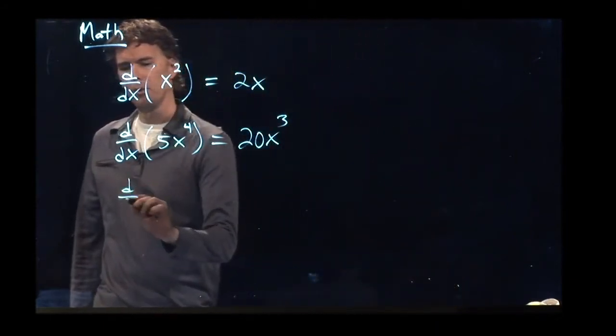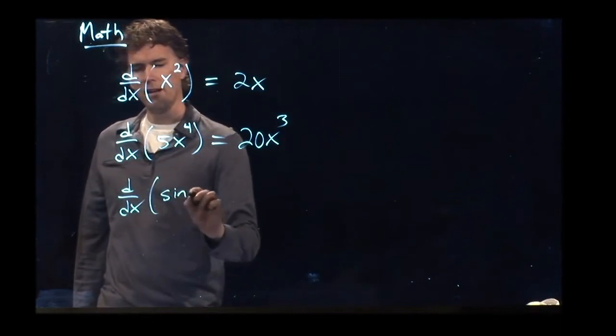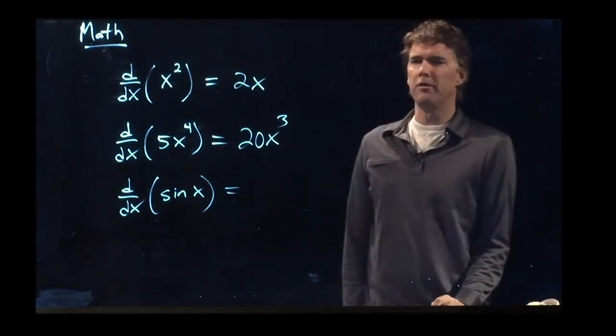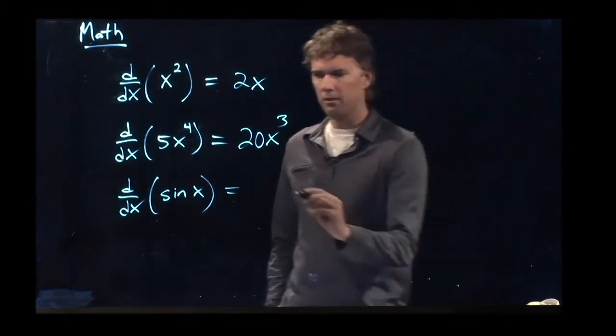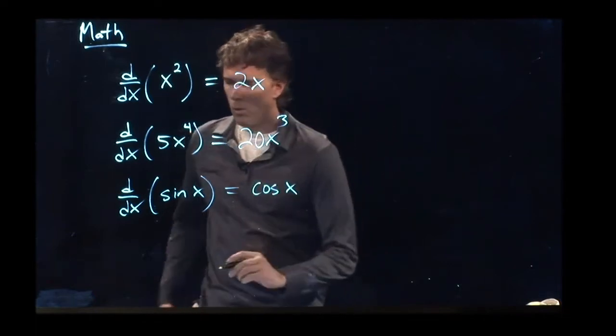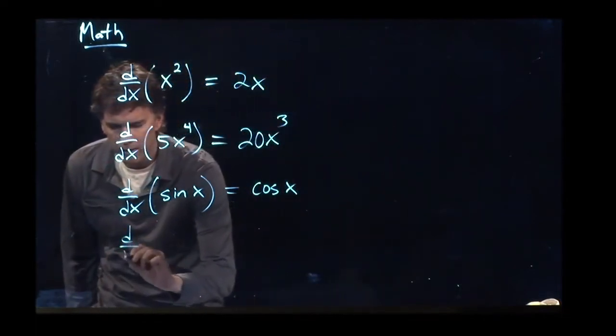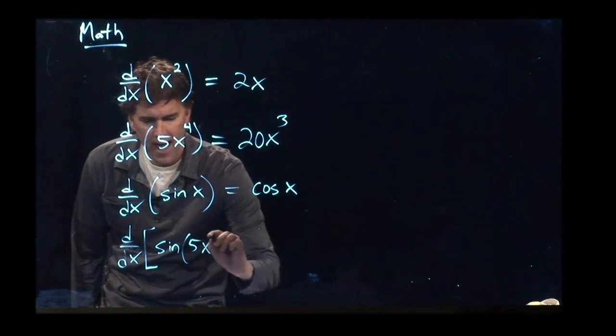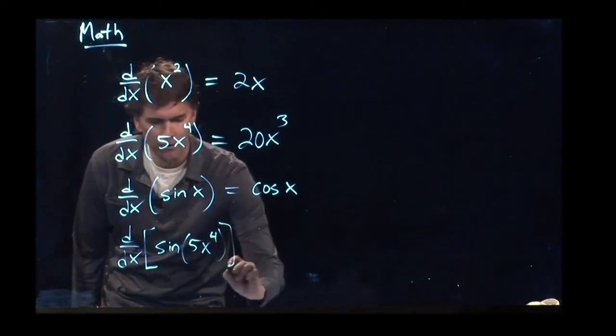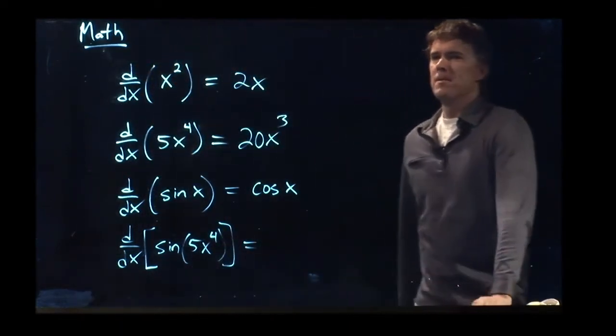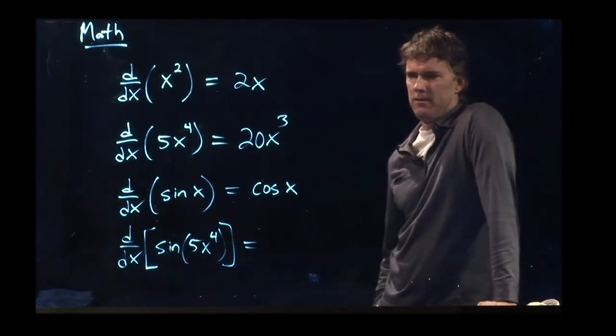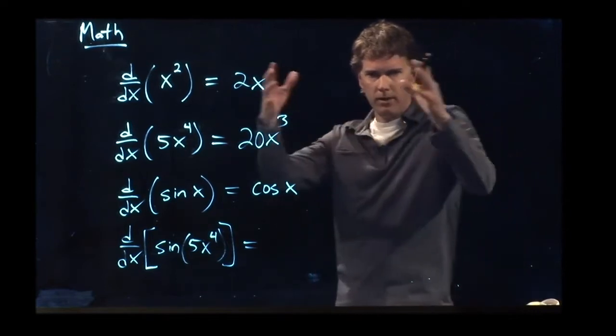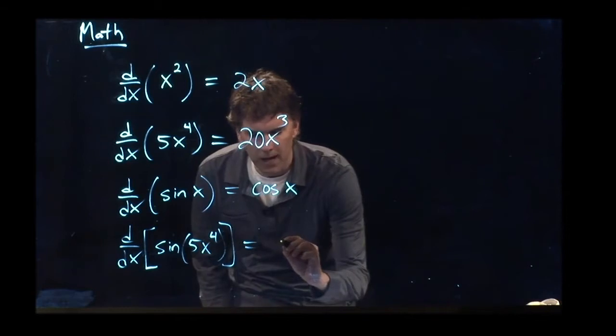What about the derivative of sine x? What about the derivative of the sine of 5x to the fourth? That's right, you use the chain rule. You take a derivative of the whole thing, which is sine becomes a cosine.